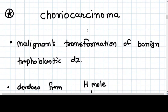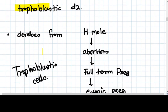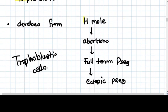Choriocarcinoma is a malignant transformation of benign trophoblastic disease. It develops most commonly from hydatidiform moles, then it can develop from abortions, even after full-term pregnancy, and also from ectopic pregnancy.